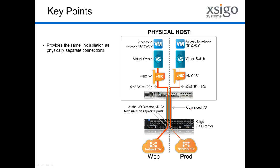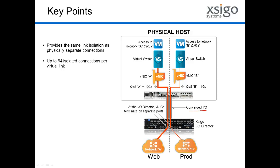With SEGO, it's the same as running a cable from one virtual NIC down to one network, and another cable from a second virtual NIC down to a separate network — you have the same level of isolation you would in a cabled environment. Additionally, you can run up to 64 of those connections through each converged I/O link, and they all remain physically isolated from each other. The only limitation is how many ports you have in your I/O director.